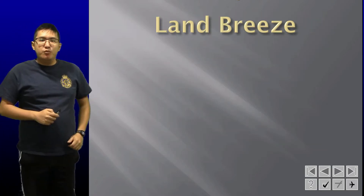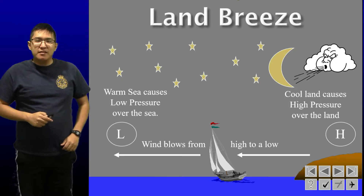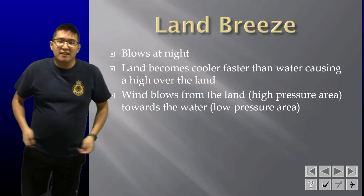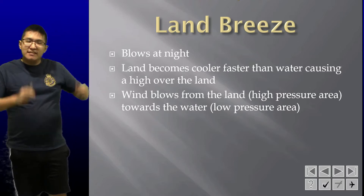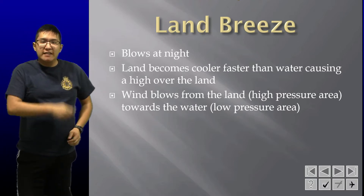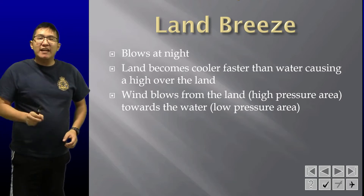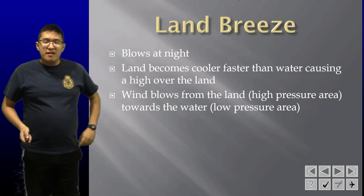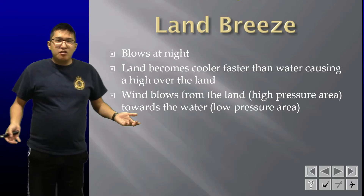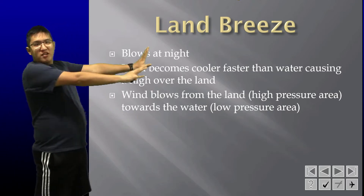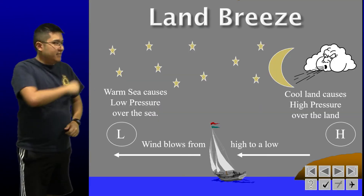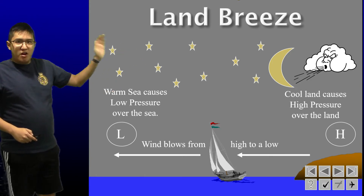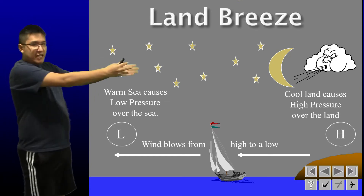Next we have different types of breezes, and this is important to come up in exams. First we have a land breeze, which blows at night. Since the land becomes cooler faster than the water, there's going to be a relatively higher pressure area over the land. Remember air goes from high pressure to low pressure, so the wind will blow from the land towards the sea. There's a low pressure system being created over the water and a high pressure system on the ground, and wind will flow from high to low.